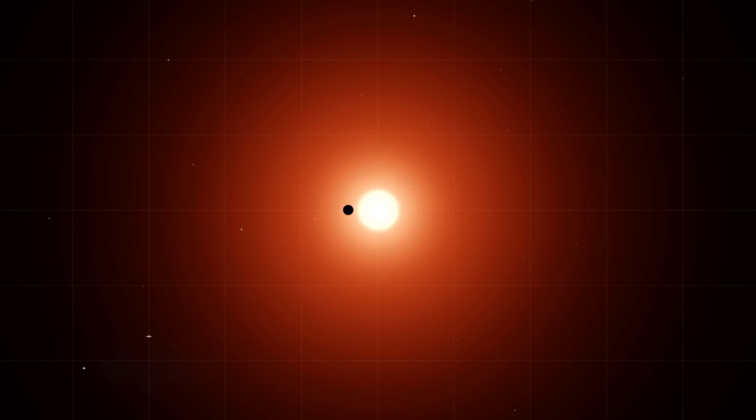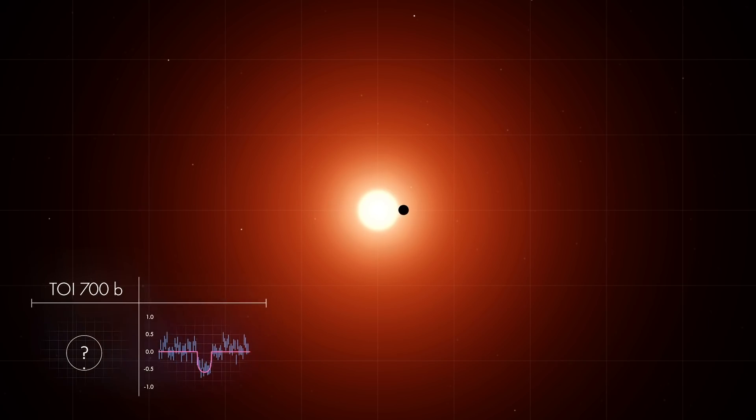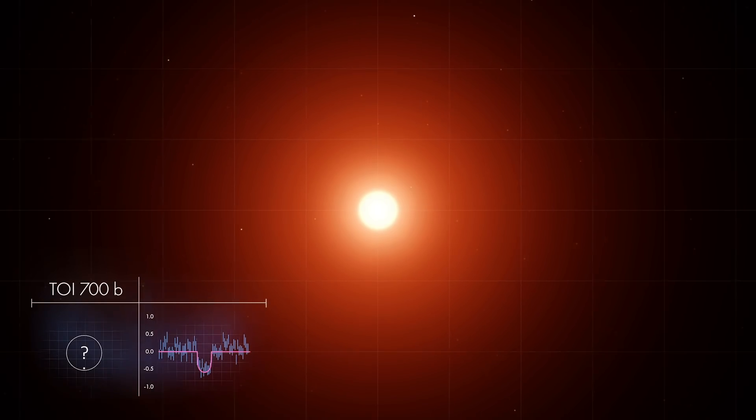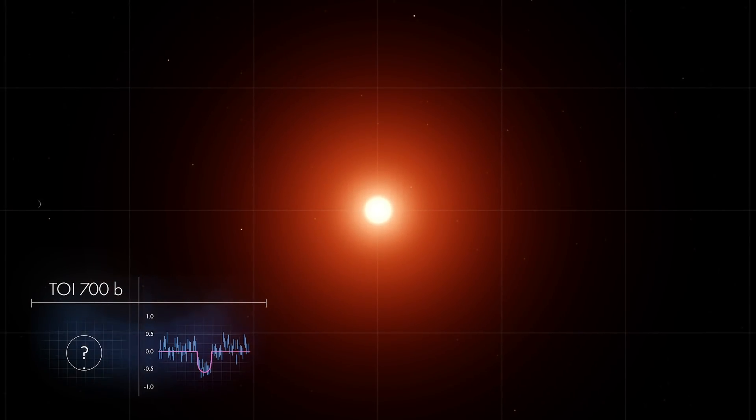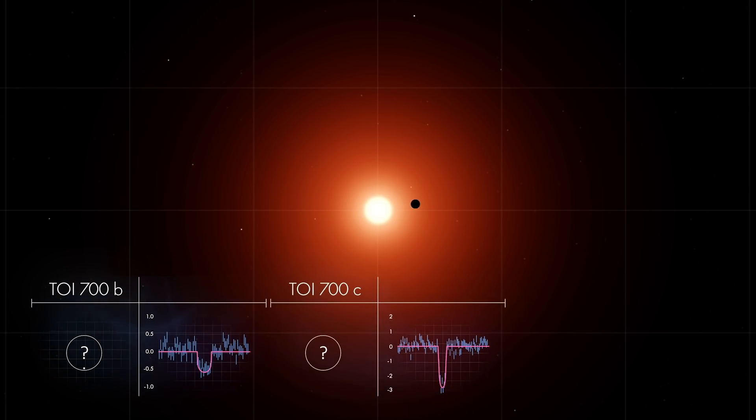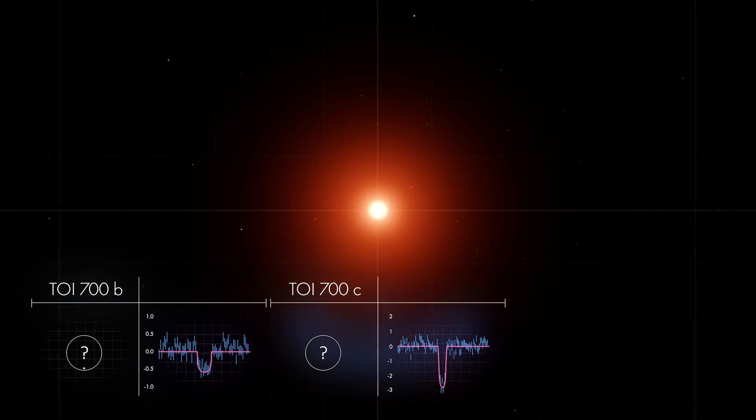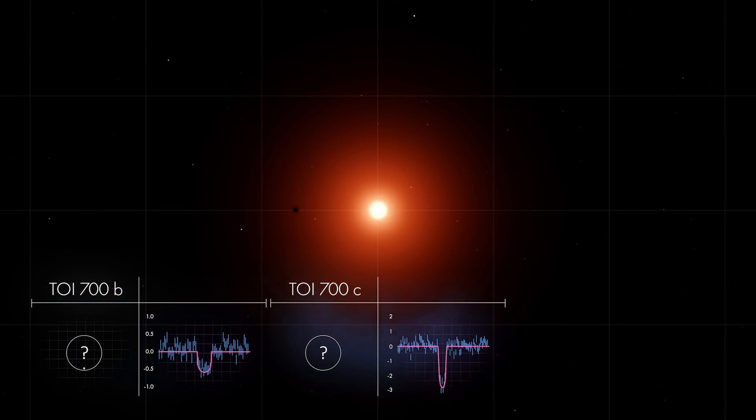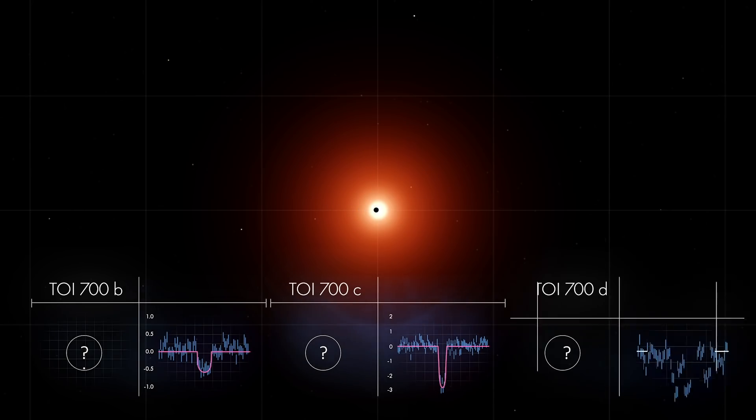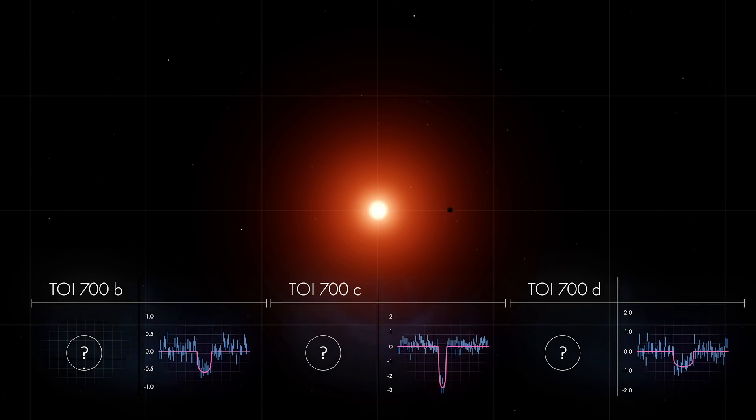One set of transits announced the presence of a planet close to the star, called TOI-700b. Another set revealed a second planet, named TOI-700c, a little farther out. The deeper, shorter transit means the planet is larger than the first, and the plane of its orbit is slightly tipped. A final set of transits showed TOI-700d orbiting even farther out.